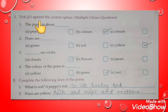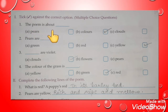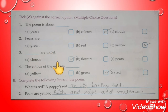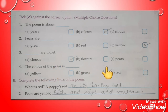First, we have to choose the correct option. The first question: what is this poem about? This poem is about colors. Pears are in yellow color. In the poem, clouds are violet. The color of the grass is green.